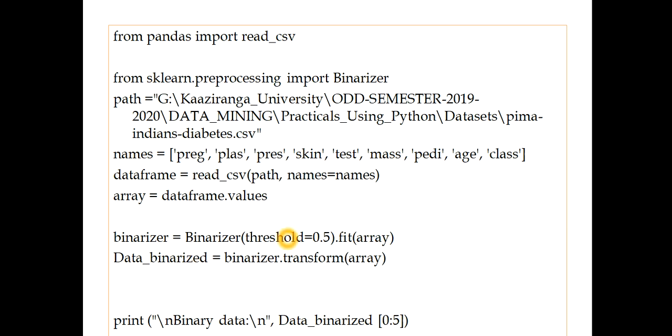So our binarized data will be binarized and be there in the binarizer. So data binarized equals binarizer.transform array. That is transform array. Now let's print the binary data. So our data will be now converted to binary form. That is, they are only in 0 and 1. Let's check that through this print function.